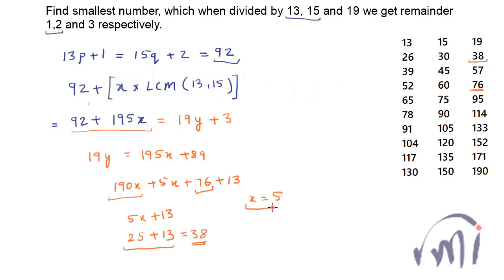That means for the value of x equal to 5 this number is completely divisible by 19 and this will be the number which when divided by 19 will give you remainder as 3. So let me substitute value of x as 5 over here and see what number we get.